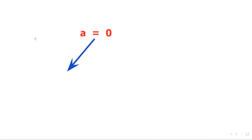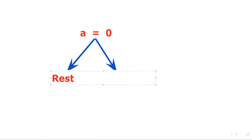When the acceleration of the object is 0, there are two possibilities. First possibility: the object is in a state of rest. When the object is at rest, its velocity would be 0, which means its acceleration is 0.